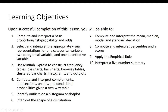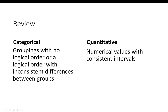Before we begin working through these learning objectives, I want to do a quick review of some of the terms from Lesson 1 that you'll see again this week. When you're summarizing data or making a graph, you'll need to know if you're working with categorical or quantitative variables. Categorical variables have groupings with no logical order — in other words, categories — or a logical order with inconsistent differences between groups, for example, rankings.